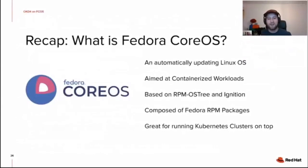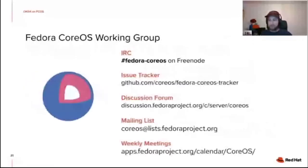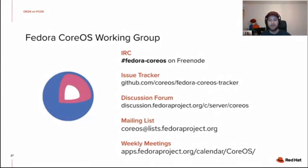Quick recap: Fedora CoreOS is an automatically updating Linux OS aimed at containerized workloads, based on rpm-ostree and ignition, composed of Fedora RPM packages, and great for running Kubernetes or OKD clusters on top. If you want to join the Fedora CoreOS working group, you can find us on the fedora-coreos channel on Freenode IRC, on our GitHub issue tracker, the Fedora Project discussion forum, the mailing list, and weekly IRC meetings on the Fedora OS calendar.